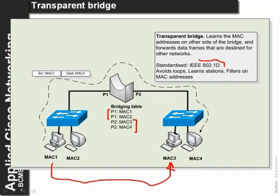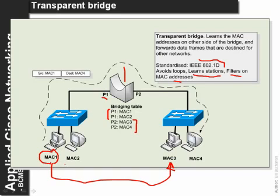There is a standard called 802.1D. The advantage of a bridge is that it avoids loops, bridges intercommunicate and find the best route to a destination. It also learns the stations on either side and is able to filter based purely on layer 2 MAC addresses. The bridging table records that on port 1 there are two machines — MAC 1 and MAC 2 — and on port 2 there is MAC 3 and MAC 4.